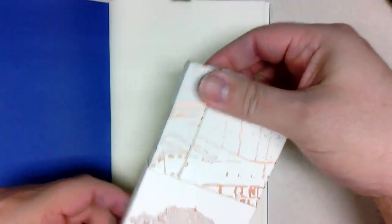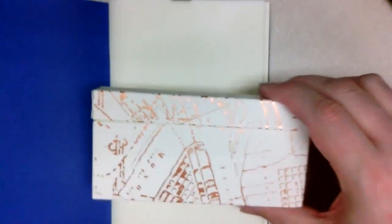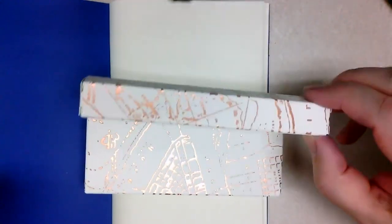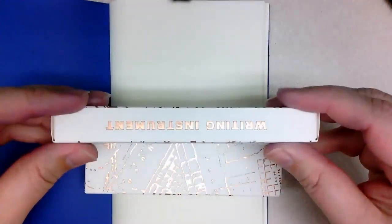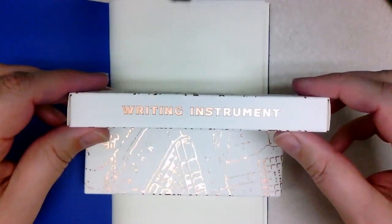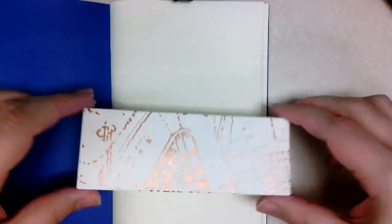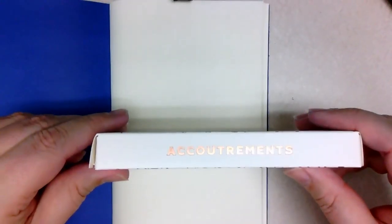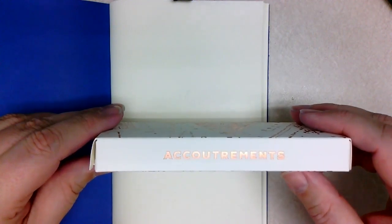There's two boxes inside this sleeve. And this one is the one that actually has the pen in it. So the pen was in here. And this just says accoutrement. I have no idea what you might get in here.